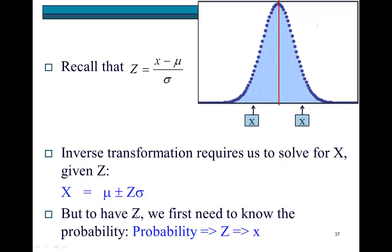But, as you would imagine, before we can have z in order to plug it in here and then find the value of x, we need to, first of all, know the probability, meaning the area under the normal curve that we need to work with. Given that area, we then find z and then, armed with this z, we plug it in here and we solve for x. So that's the logical stepwise process.